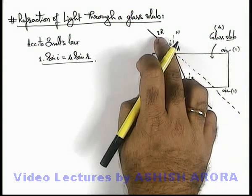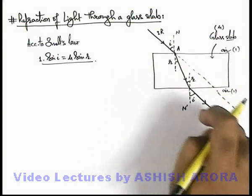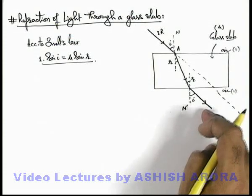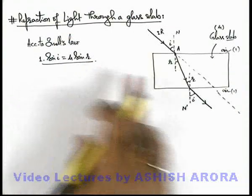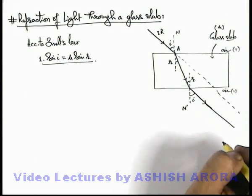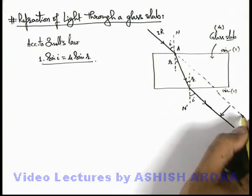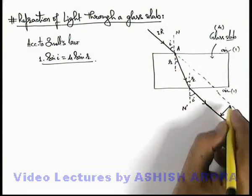Then using this law we can see that the angle will remain same. So the ray which is finally emerging out will be laterally displaced by some distance from the initial direction of the ray.